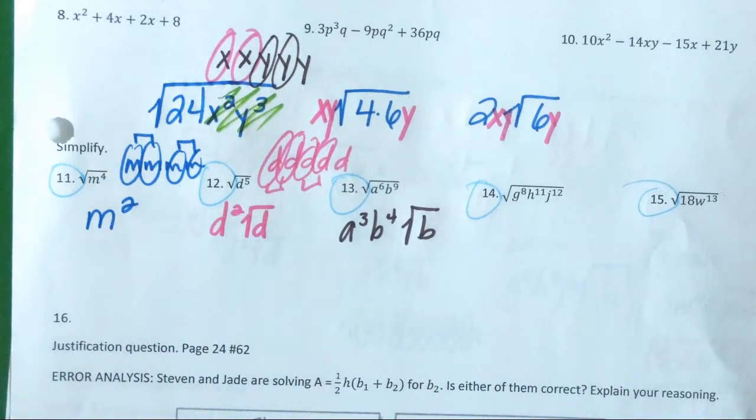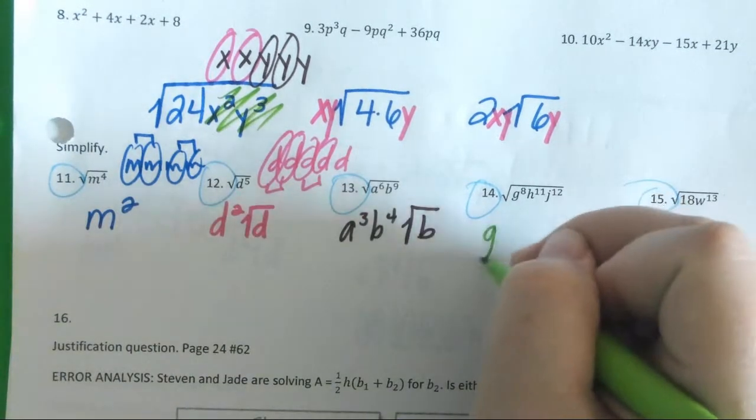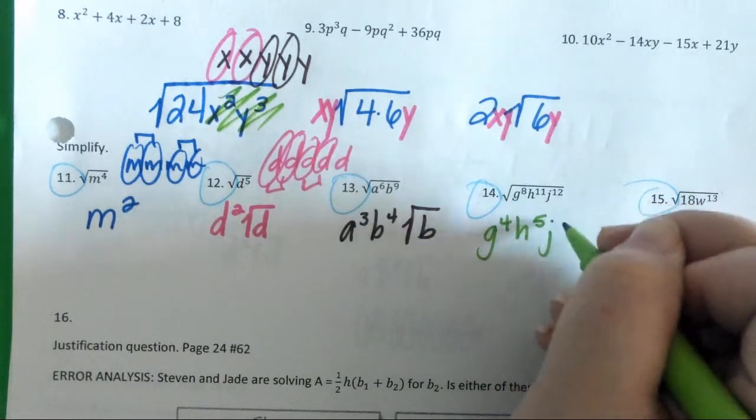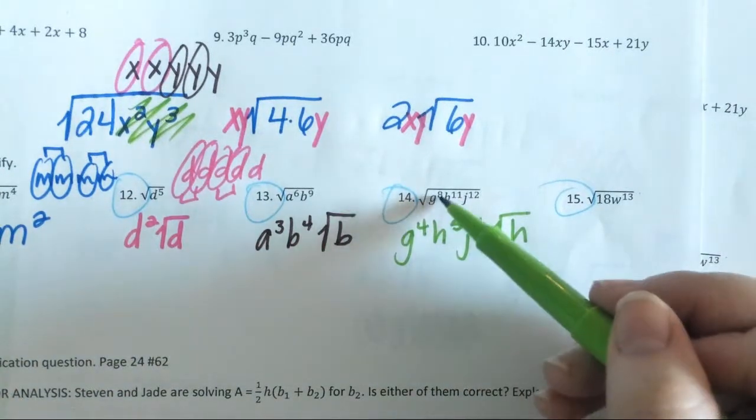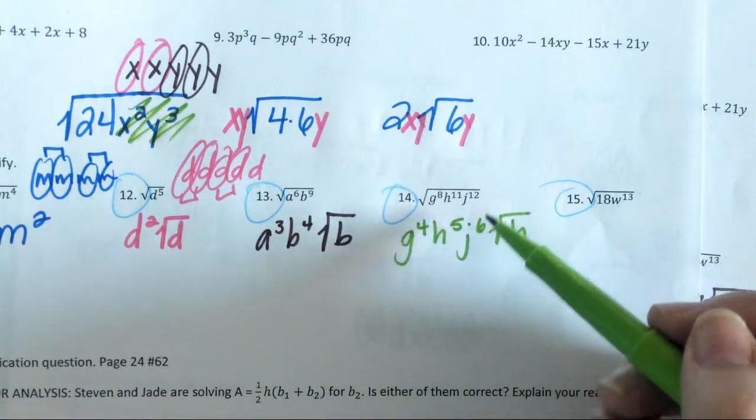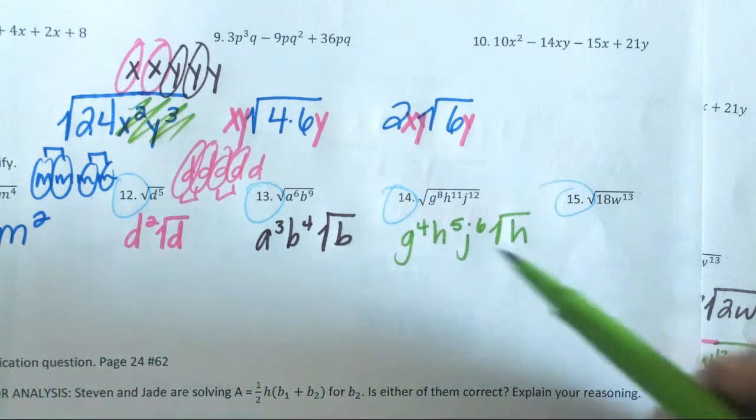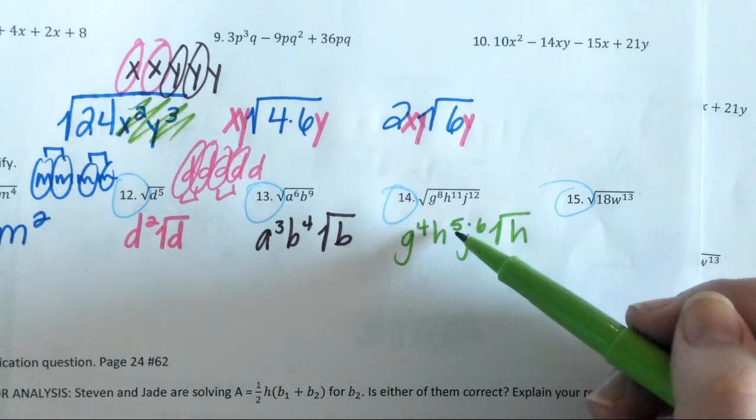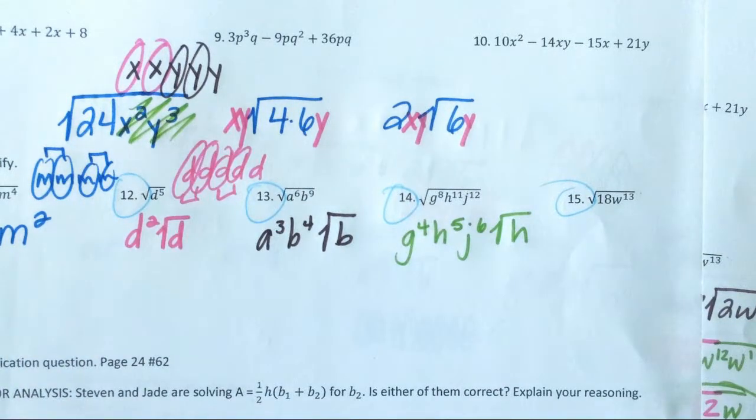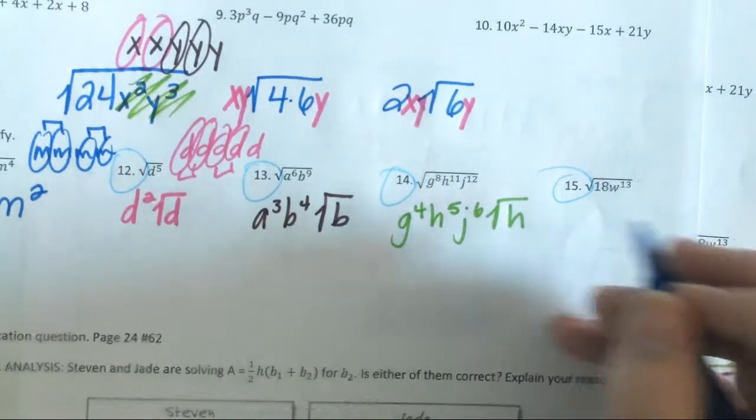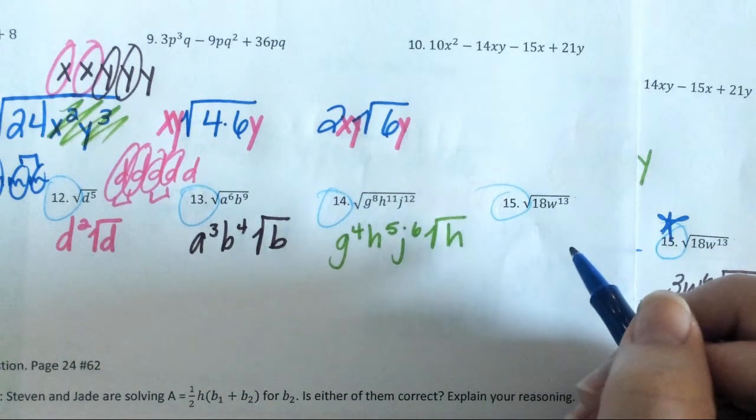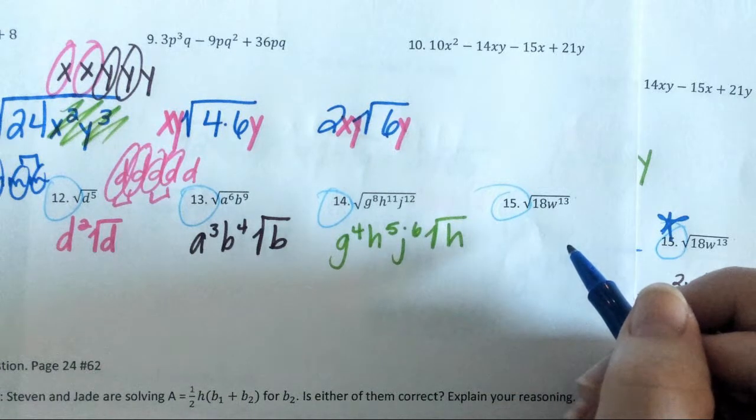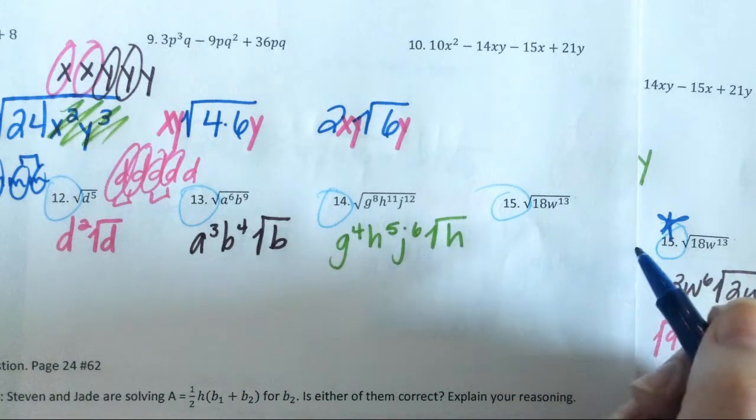14. G to the 4th, H to the 4th, J to the 6th, square root with H. So what's nice about this one is 8 divided by 2 is 4. 12 divided by 2 is 6. So the G and the J are easy. The H is the only one where we have to think. Back up to 10. 10 divided by 2 is 5. We have one H left over. Perfect. And our last one.